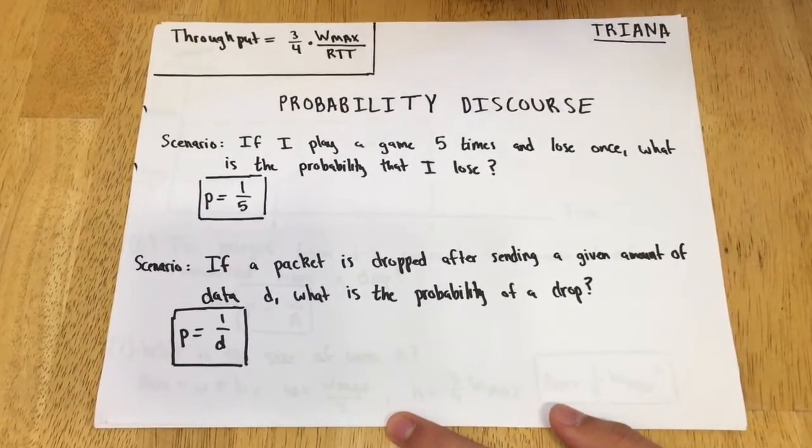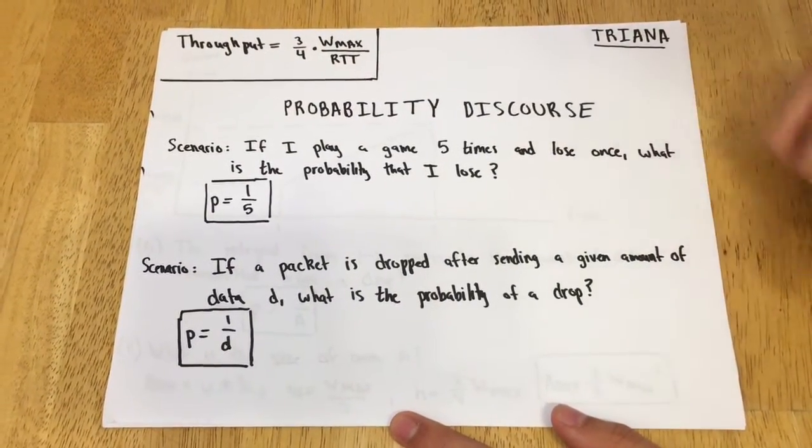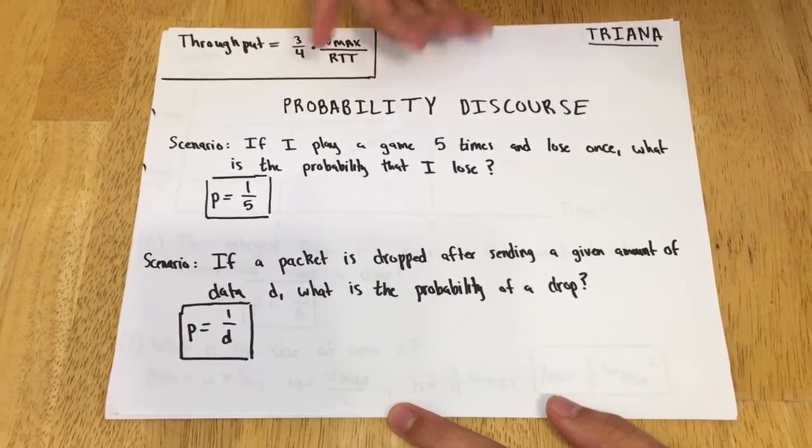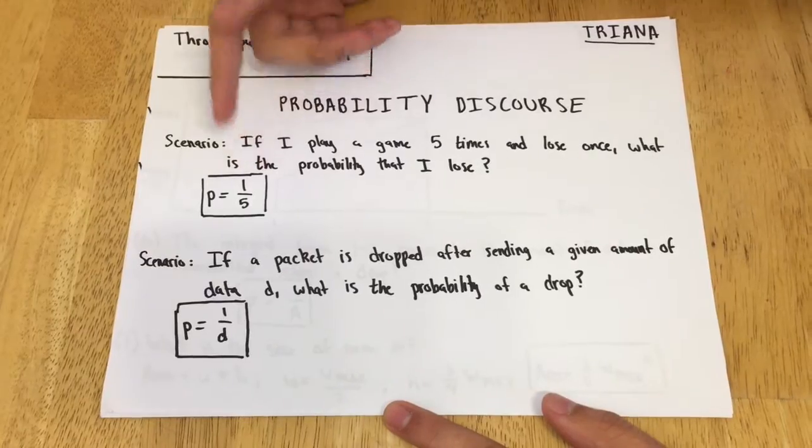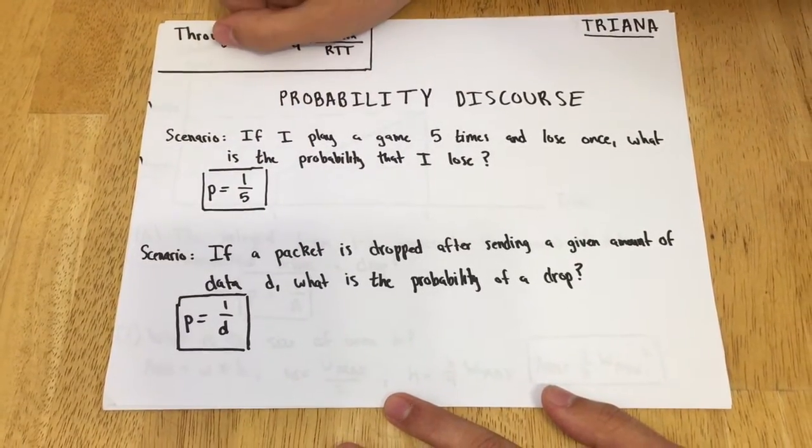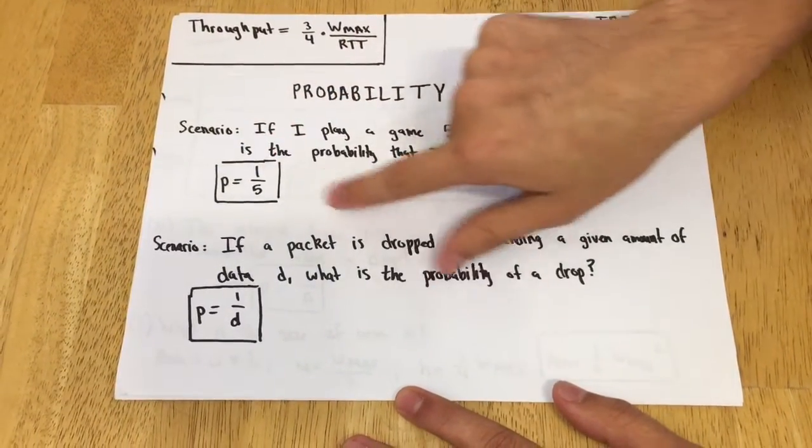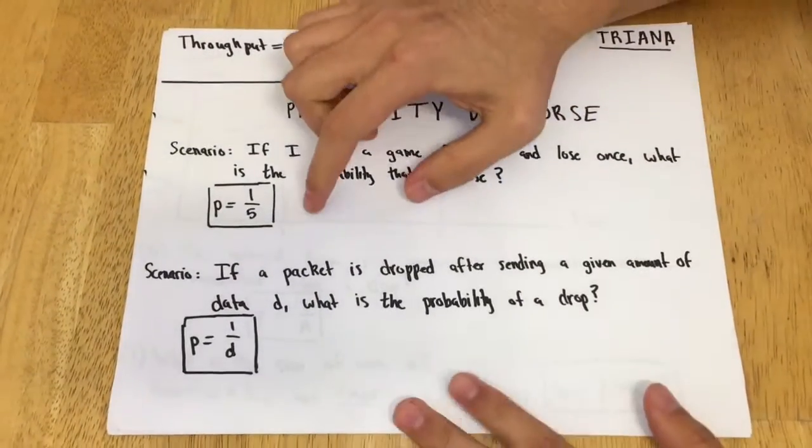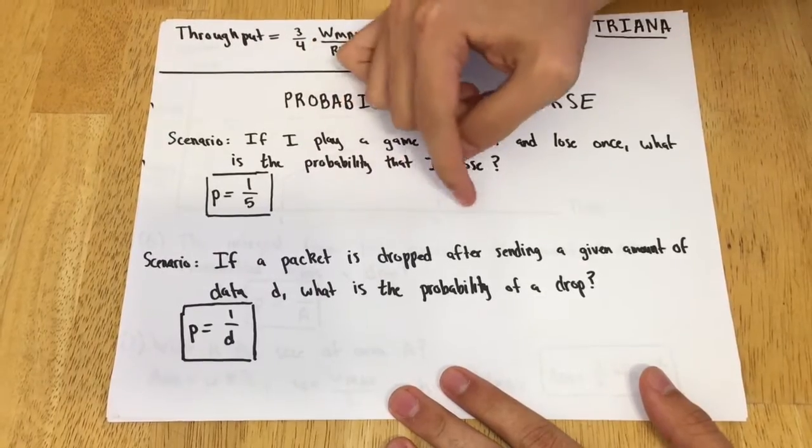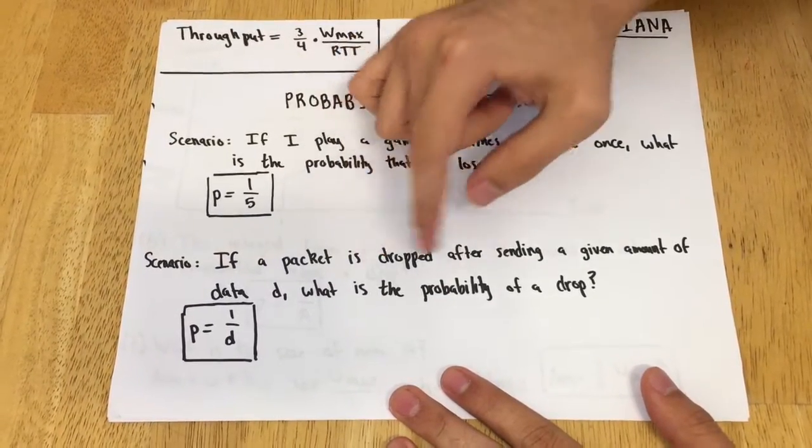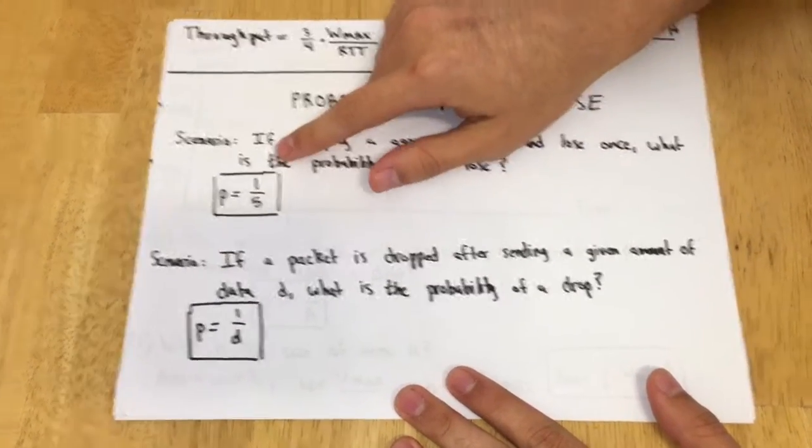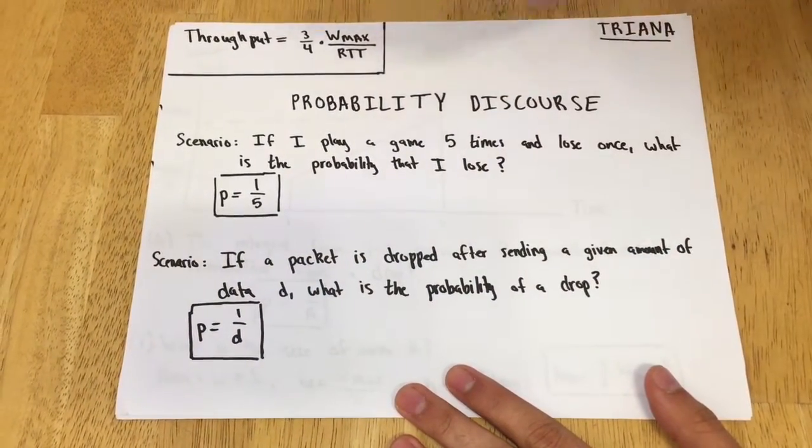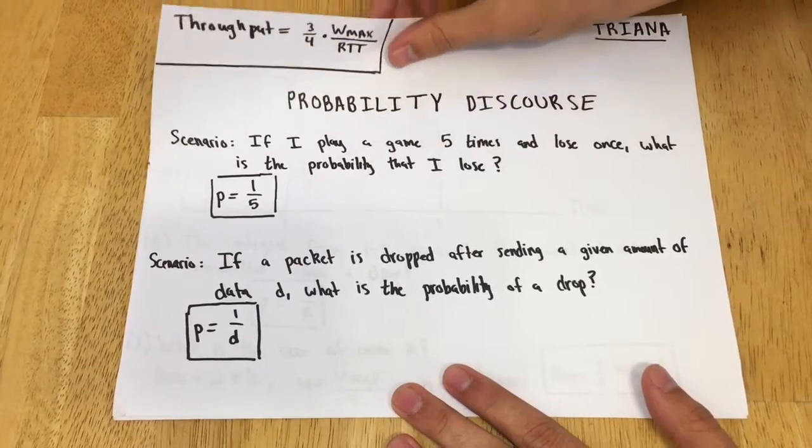Let's look at two simple scenarios. In this first scenario, if I play a game five times and I lose once, what is the probability that I lose? Obviously the probability is 1/5—we took the loss over the number of attempts. Thinking about it more in the context of sending packets: if a packet is dropped after sending a given amount of data D, what is the probability of a drop? Very similar—the probability is just 1 over the amount of data sent before the drop.